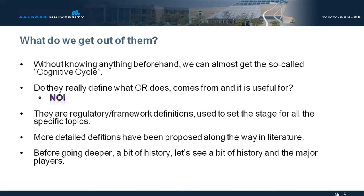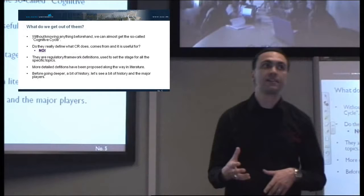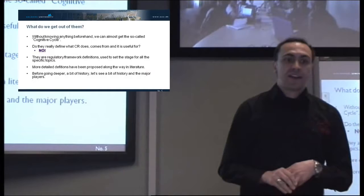Of course, once we have all this initial information, do we already know how to develop a cognitive radio? Of course not. That just defines the main framework, the main structure, the main principle. Even if we have a more detailed cognitive cycle, we don't know what to do — we are still missing information. These definitions are definitions on paper, they are regulatory, they need to be open. They do not need to provide technical indications on how to implement a cognitive radio. In literature there are more detailed definitions, which we will analyze.